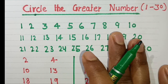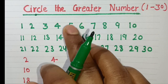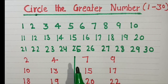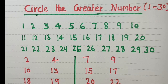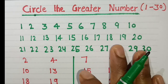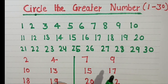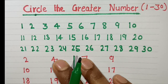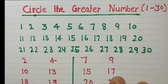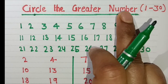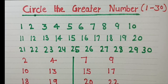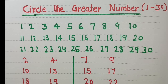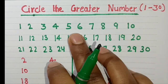Hello friends, welcome to our channel. Today in this video we are going to learn the concept of circle the greater number. Children, tell me: what is a greater number? A greater number is that number which comes last in the counting. Today we will circle the greater number from 1 to 30, using counting to help us.